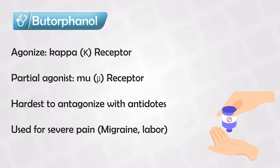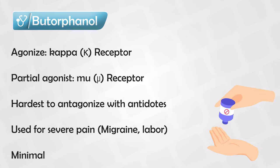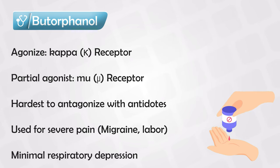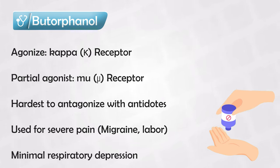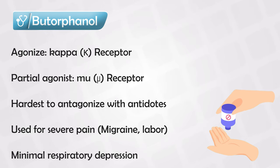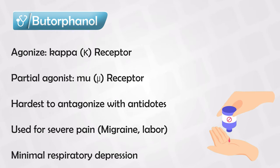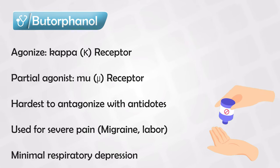And just like pentazocine, it also causes immediate withdrawal symptoms when used with opioid antagonists. This medication is very famous because it has the least respiratory depression among all the opioid medications.